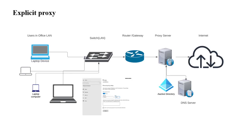In this section I'm going to explain how explicit proxy works. You can see from the left side — users in an office LAN network with multiple laptops connected to a switch. On these laptops or desktops, proxy settings must be configured with the right proxy server address and port number. This can be pushed via group policies, SCCM, or any centralized configuration management tool. The switch is connected to a router or gateway, from which the proxy server is reachable. For authentication, an Active Directory or SAML-based IdP must be integrated, and a DNS server must be configured. The proxy server is then connected to the internet directly or through a firewall.